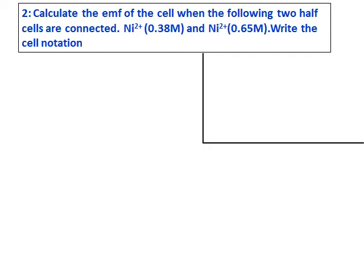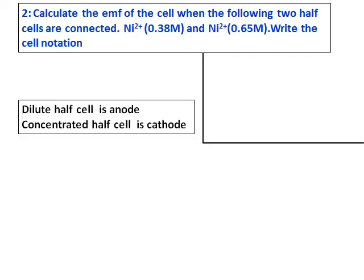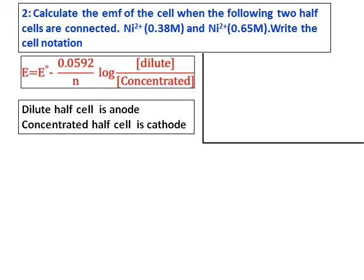We have a nickel electrode and first we have to decide which is the cathode and which is the anode. As a rule, the lower concentration always acts as the anode and the higher concentration acts as the cathode. So we start with the equation: E equals E0 minus 0.0592 divided by N, log of dilute over concentrated. The dilute half cell goes on top and the concentrated at the bottom — the dilute half cell is the anode and the concentrated half cell is the cathode.